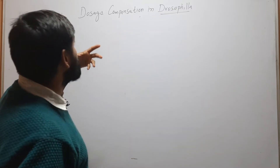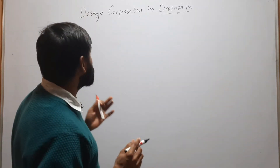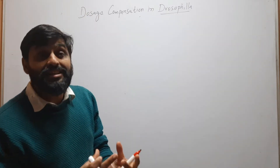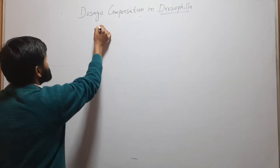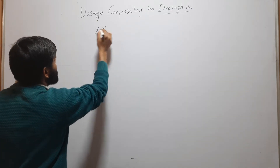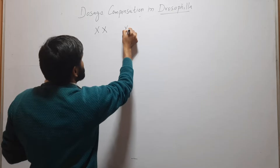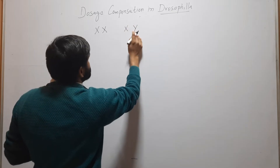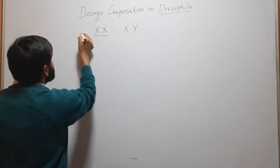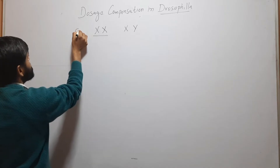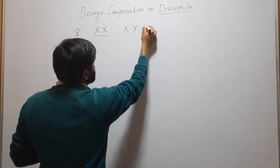Before discussing dosage compensation in Drosophila, first we have to know the sex determination type in Drosophila. In Drosophila, sex determination is XX and XY type, where XX is female and XY is male.